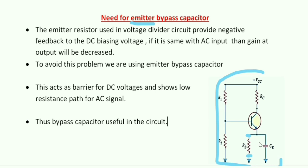We know that a capacitor is a good blockage for DC voltages and a good conductor for AC signals. So, if we include a capacitor across the emitter resistor, then we will get a low resistance path for the AC signals, and we can continue the biasing potential which is required to keep the Q-point stable.